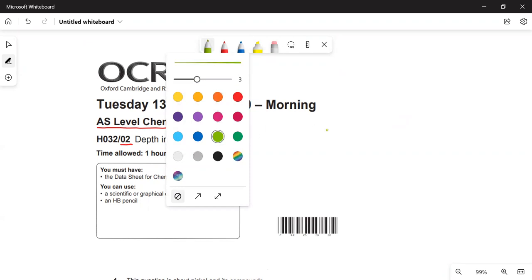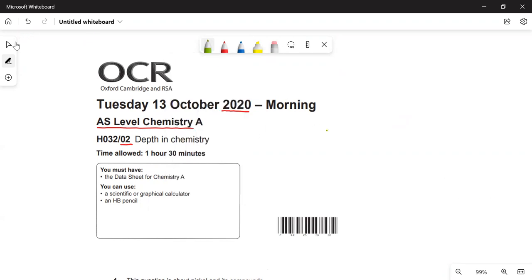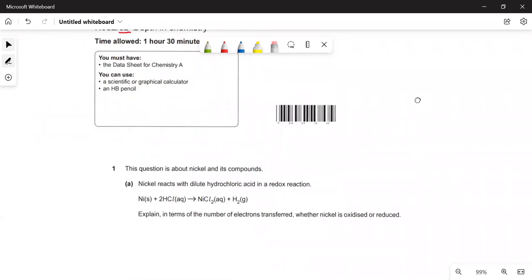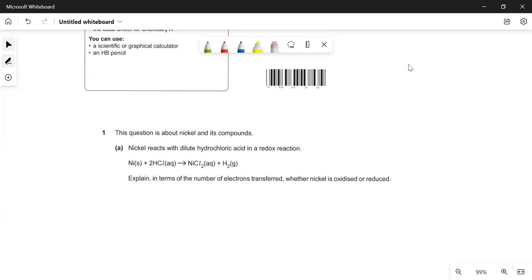The first question is about nickel reacting with dilute hydrochloric acid. Explain in terms of electrons whether the nickel is oxidized or reduced. We've got nickel chloride there, which is an ionic compound. Chloride is Cl- and there's two chlorides, so nickel must be present as the Ni2+ ion. Nickel has gone from nickel metal to the Ni2+ ion, so that means it's lost two electrons. That means it has been oxidized.